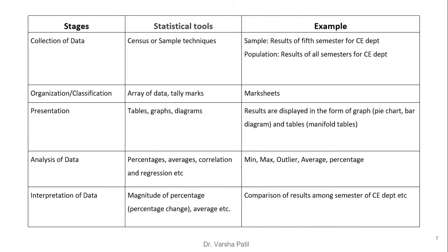Now we will explain all five stages with the help of an example. The first stage — collection of data — can happen through either a census, which means collecting data for the entire population, or through sampling. For example, results of the fifth semester of the CE department represent a sample, while population would be results of all semesters for the CE department.